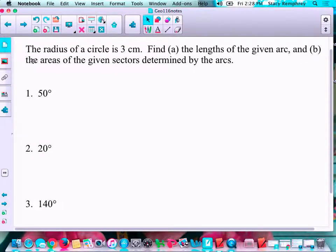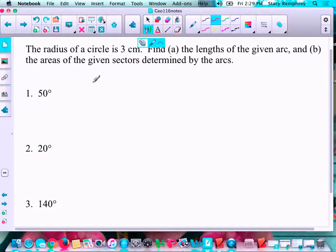So, the radius of a circle is 3 centimeters for all of these. Find the length of the given arc and the areas of the given sectors determined by the arcs. So, what they are meaning here, and again, I apologize for my drawing abilities, is here's your circle. If this part in here is 50 degrees for this problem, you're going to find, first, the length of the arc, so how far is it from here to here, and then the area of the sector, what's the area of this piece.